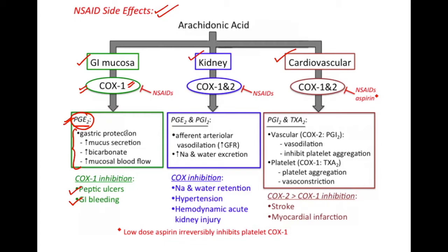Therefore, in patients with gastrointestinal bleeding or ulcers, if NSAIDs are required, we give selective COX-2 inhibitors — for example, celecoxib — at the minimal possible dose.